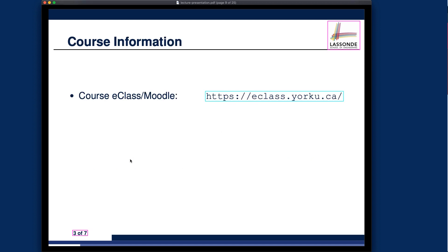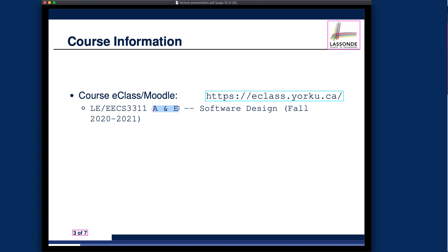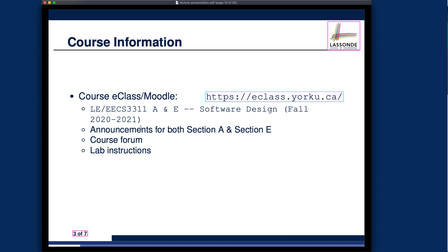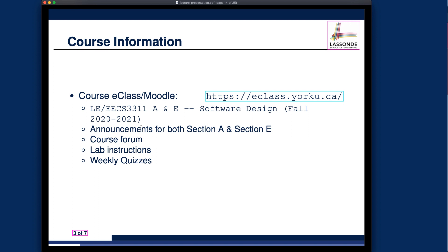About the course information: there will be a Moodle or E-Class site. You should see the icon for 3311 — we have a combined site for section A and section E, so both sections share the same site. We're going to make announcements from there for both sections, so please check your email regularly. There will also be a course forum; you are subscribed by default, but you can manually unsubscribe if you wish, though I wouldn't recommend it. Lab instructions will also be posted on the course E-Class, and you'll need to take weekly quizzes.